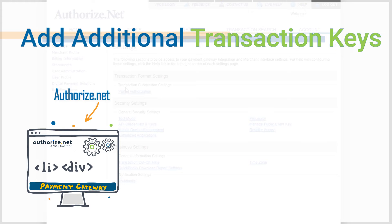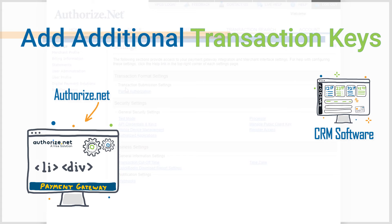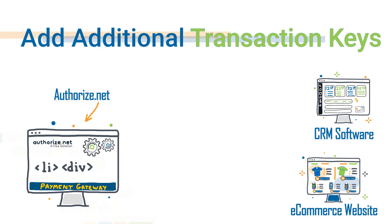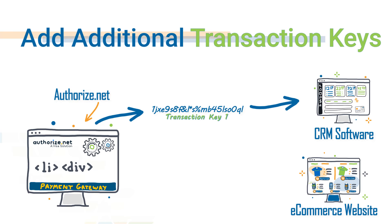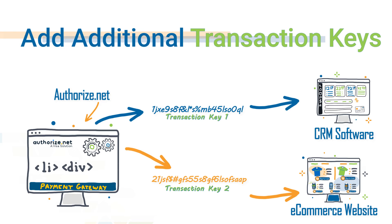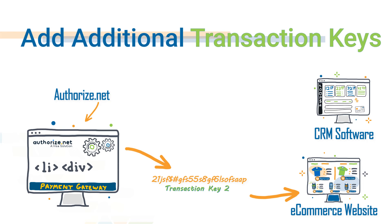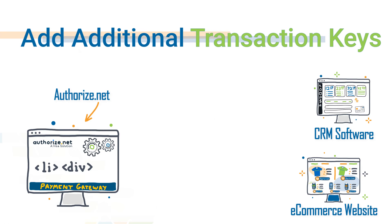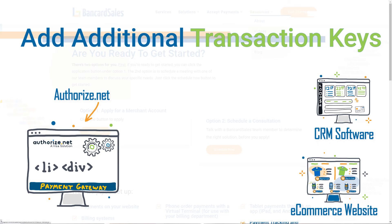For example, if you have a CRM that you collect payments through and you're also selling through your e-commerce website, and each of those requires a payment gateway integration, you can set up separate keys. That way, if you ever needed to disconnect one but not the other, you could do so by just deleting one key inside your Authorize.net account. Just know you can create more than one transaction key in your Authorize.net account.